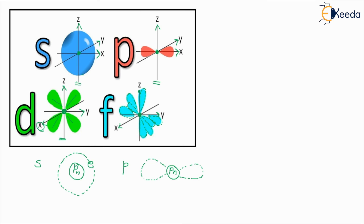So with this we finish the orbital shapes of S, P, D, and F. We started off with what are orbitals, had a touch on the electronic configuration, and how the electronic configuration actually affects the shape of the S orbital, P orbital, D orbital, and F orbital. Thank you so much for watching this video.